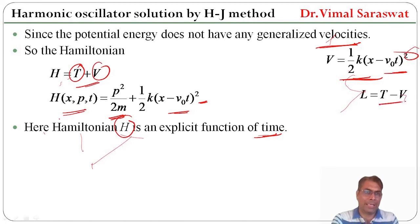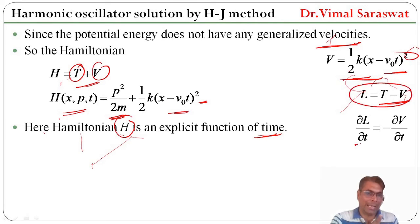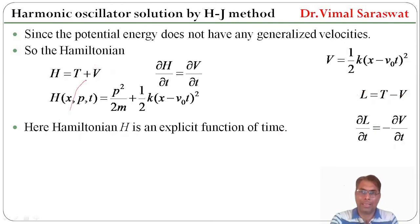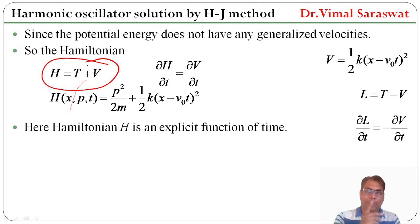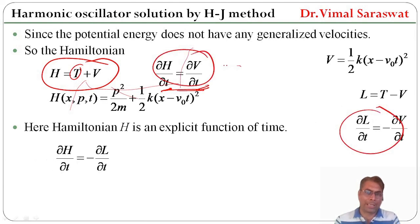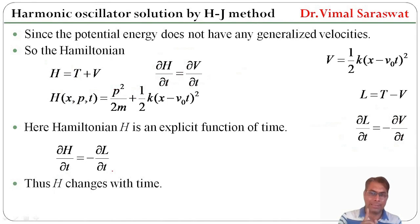Since the Lagrangian L equals T minus V, differentiating with respect to time gives ∂L/∂t equals minus ∂V/∂t, because T does not depend on time. Similarly, differentiating the Hamiltonian gives ∂H/∂t equals ∂V/∂t, because T does not depend on time. Comparing these two equations, we get ∂H/∂t equals minus ∂L/∂t, thus the Hamiltonian H changes with time.